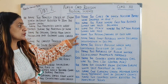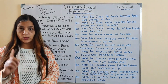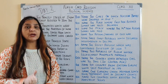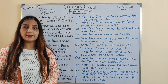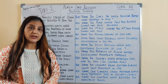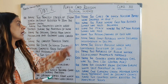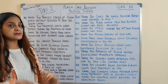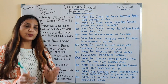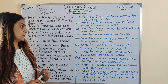Next question: name two regions or areas of the Cold War. Aise konse areas the jahan pe Cold War ke time pe USA aur Soviet Union ke beech conflict situation rahi, and the answer is Congo, Korea, Vietnam. Aapko in 3 mein se koi bhi do likh sakte ho.